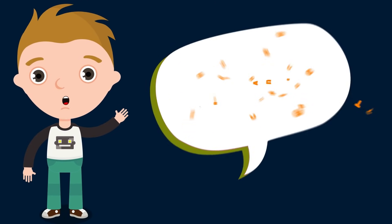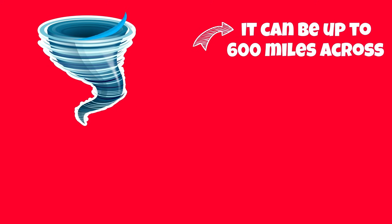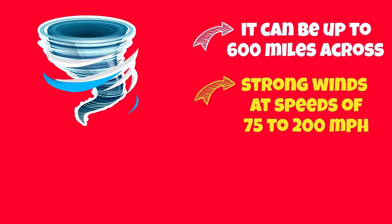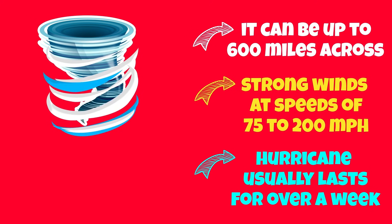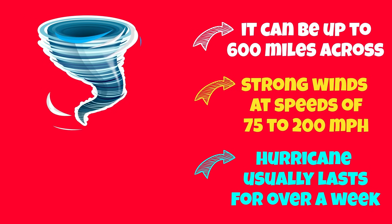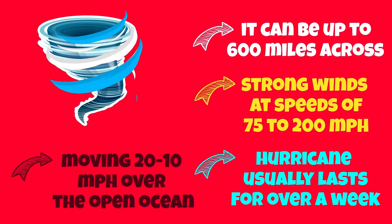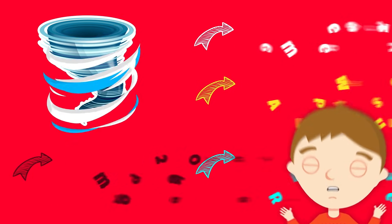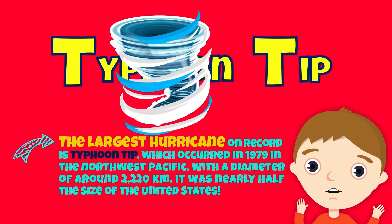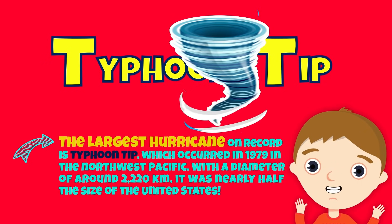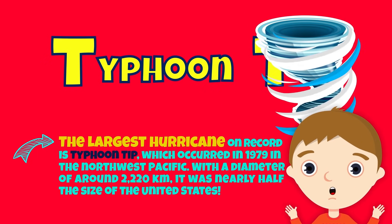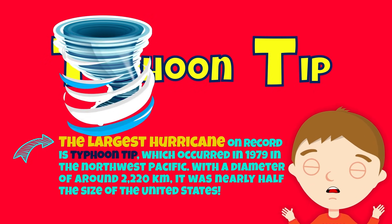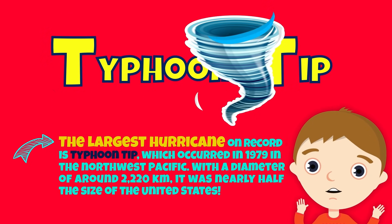So how big can hurricanes get? A hurricane can be up to 600 miles across, with strong winds spiraling inward and upward at speeds of 75 to 200 miles per hour. Each hurricane usually lasts for over a week, moving 10 to 20 miles per hour over the open ocean. The largest hurricane on record is Typhoon Tip, which occurred in 1979, with a diameter of around 2,220 kilometers — nearly half the size of the United States.